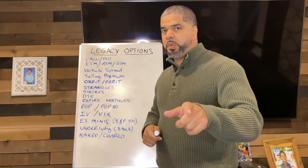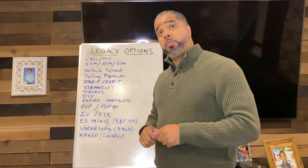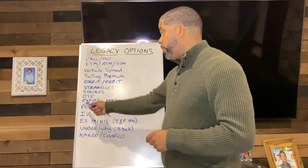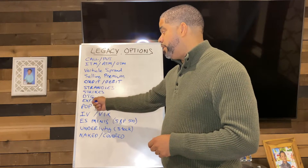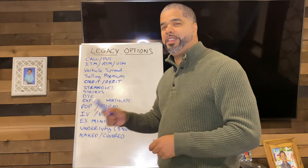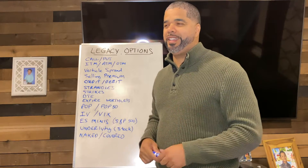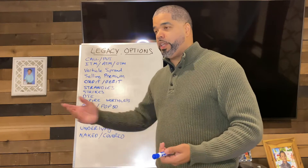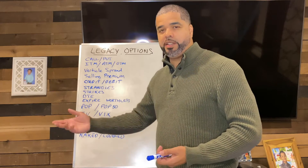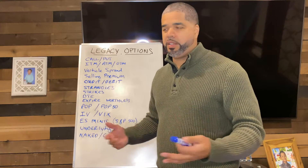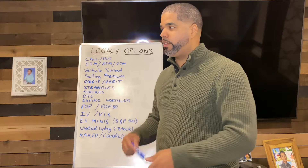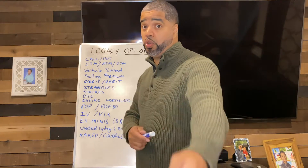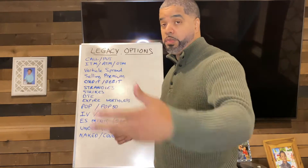DTE — and it's football season, but we're not talking about defensive credit. We're talking about days to expiration. If you sold a put 40 days out, that's 40 DTE — how many days you have until that contract that you sold expires.